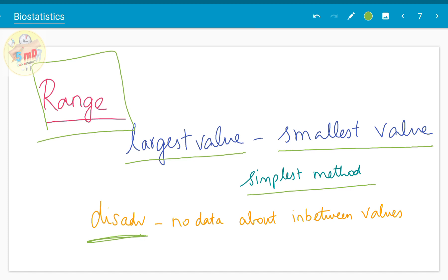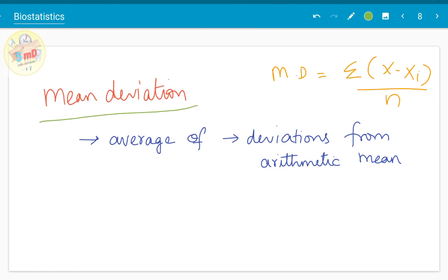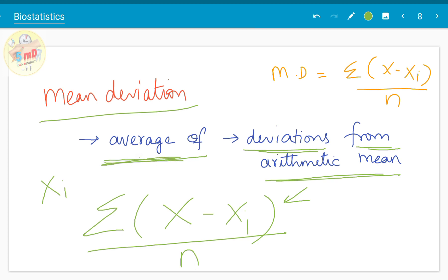The second measure of dispersion is mean deviation. Mean deviation, as the name denotes, is the average of deviation from the arithmetic mean. For example, if x̄ is the arithmetic mean and xi is an observation, how far the xi is located from x̄ you can find out by subtracting xi from x̄. This is the deviation from the arithmetic mean. You have to sum it up and divide by the total number of observations, which is the average. So average of deviations from arithmetic mean is mean deviation.